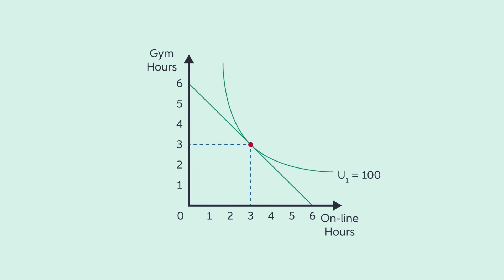How will we know that Garrett is allocating his time optimally? When he is consuming a combination of goods that is on his budget constraint and the slope of his budget constraint is equal to the slope of his indifference curve. Garrett is currently consuming the maximum budgeted hours each week with 3 hours each of gym time and online time.